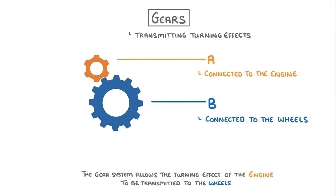Now there are two important things to notice about this. One is that the gears turn in opposite directions. So here we can see that gear A is rotating anti-clockwise, but gear B is rotating clockwise.